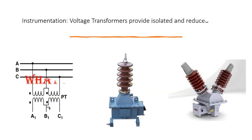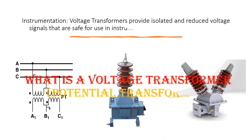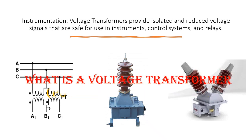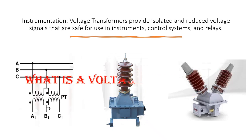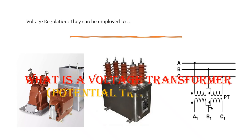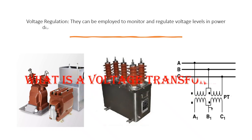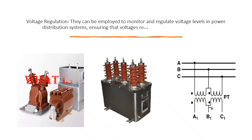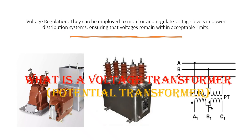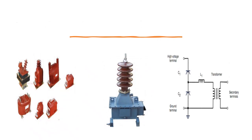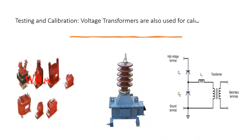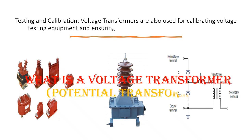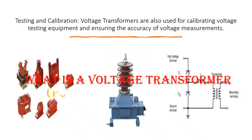Instrumentation: voltage transformers provide isolated and reduced voltage signals that are safe for use in instruments, control systems, and relays. Voltage regulation: they can be employed to monitor and regulate voltage levels in power distribution systems, ensuring that voltages remain within acceptable limits. Testing and calibration: voltage transformers are also used for calibrating voltage testing equipment and ensuring the accuracy of voltage measurements.